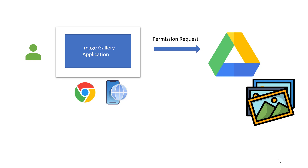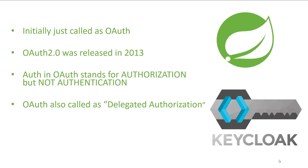OAuth is a standard way of providing authorization — that is, permission — for service A (the image gallery application) to access service B (the user's Google or Facebook account). When the framework was initially developed it was called OAuth, but later an updated version 2.0 was released in 2013, hence OAuth2. Importantly, the A in OAuth stands for authorization, not authentication, because we are providing authorization for one service to access another. This is why OAuth2 is also called delegated authorization.